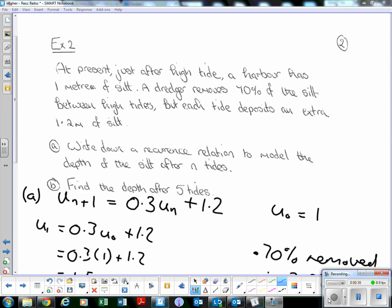So here we're going to go one step further and generate a slightly different type of recurrence relation. Example two: At present, just after high tide, a harbour has one meter of silt.